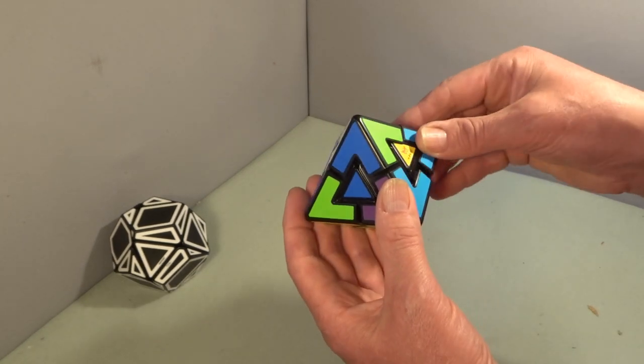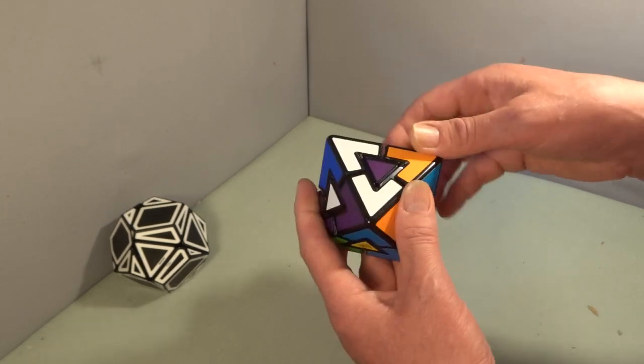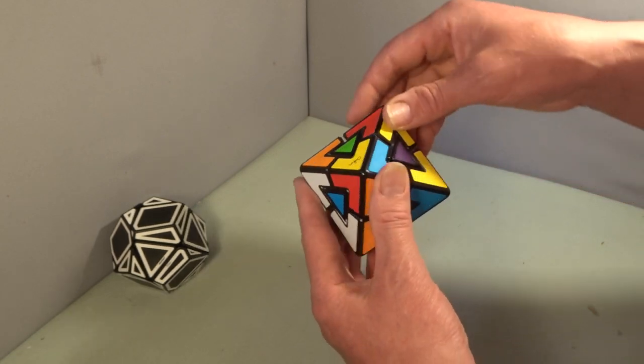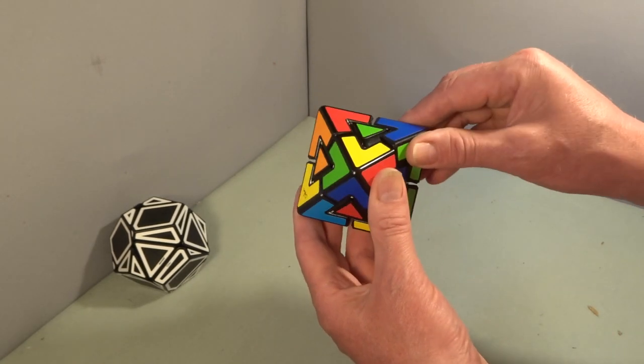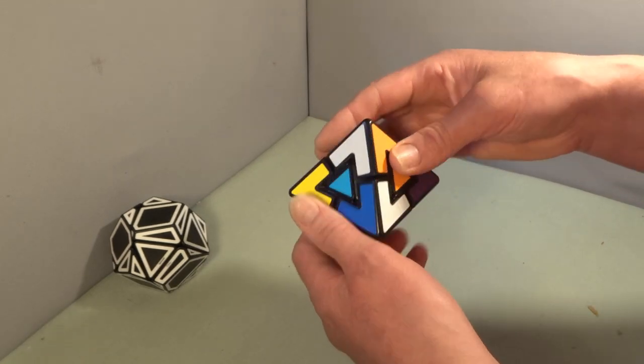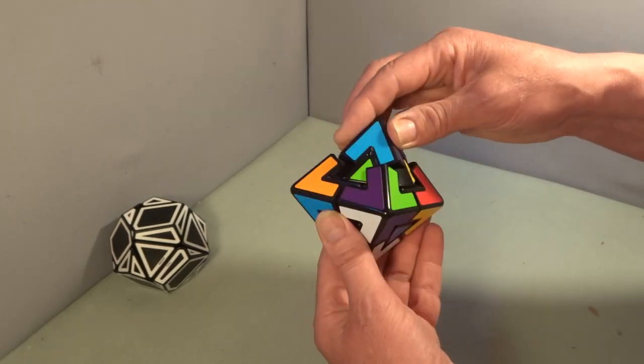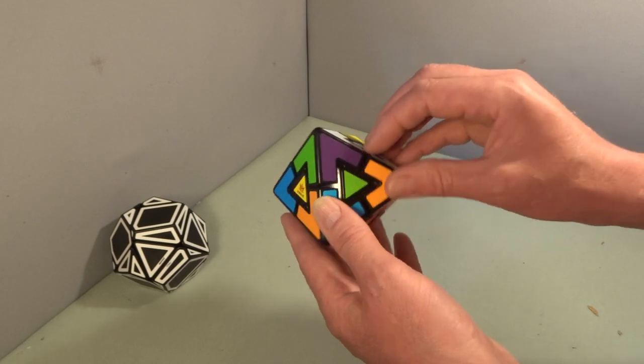However, the way it moves is very confusing because it just doesn't really work how you would expect it to. So although it's just a three by three it's a lot more difficult in practice to solve than a three by three.